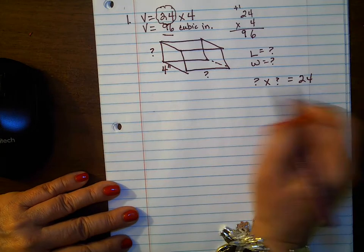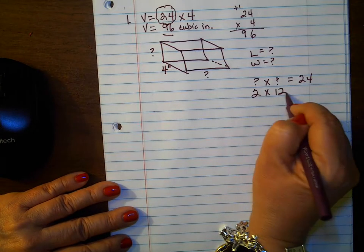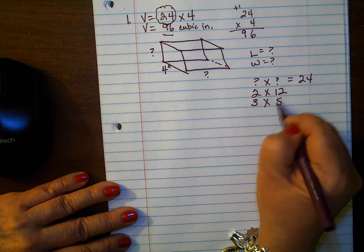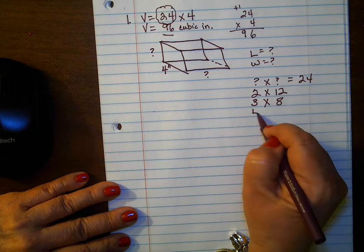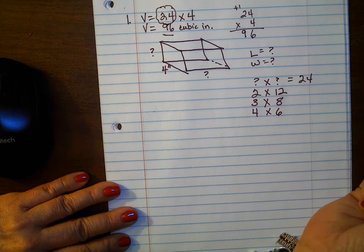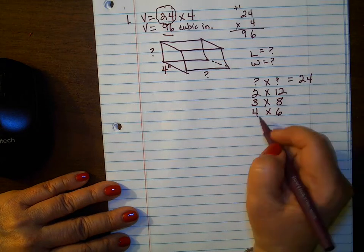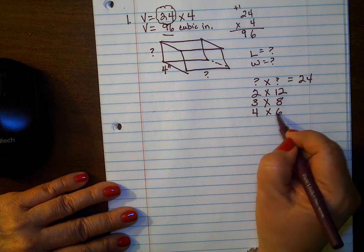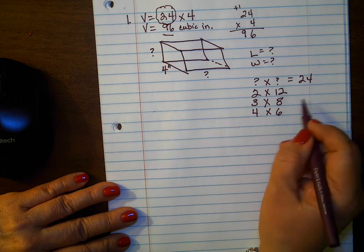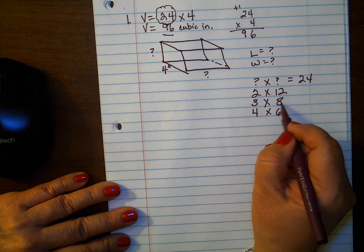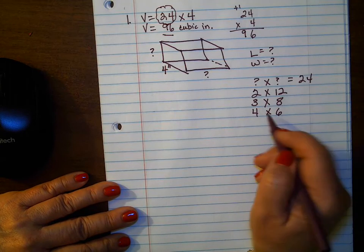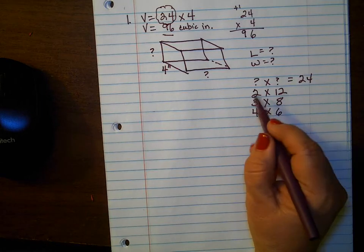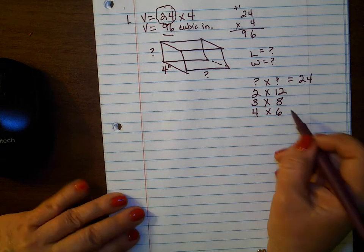So we did this one: 2 times 12 equals 24. 3 times 8 equals 24. 4 times 6 equals 24. Is there a 5 times anything? 6 times anything? No, we've already done that one. 7? Nope. 8? We did 8 times 3. 9? Nope. 10? Nope. 11? Nope. 12? 12 times 2, or 2 times 12. And that's as far as we can get.